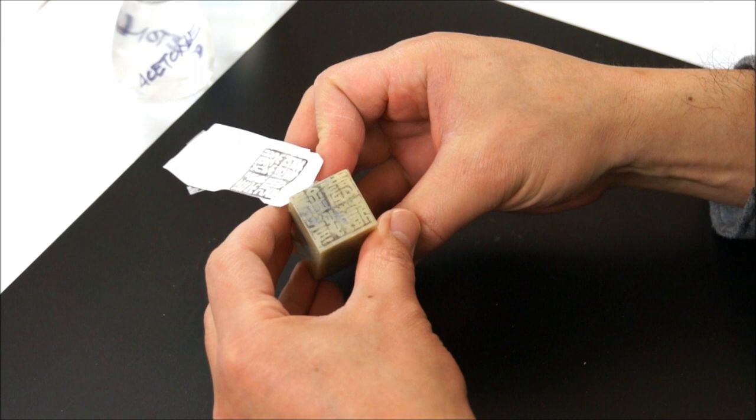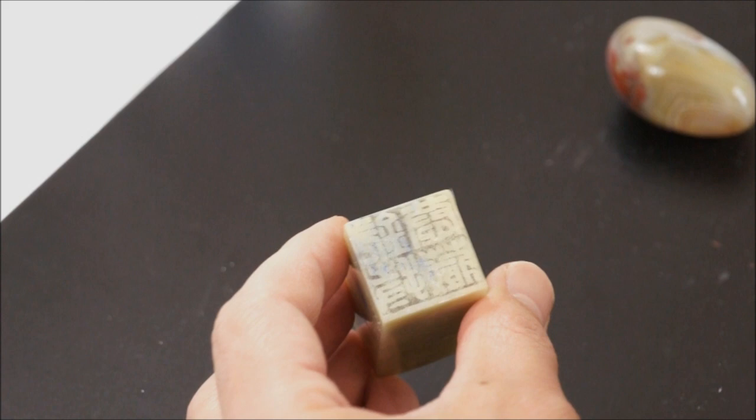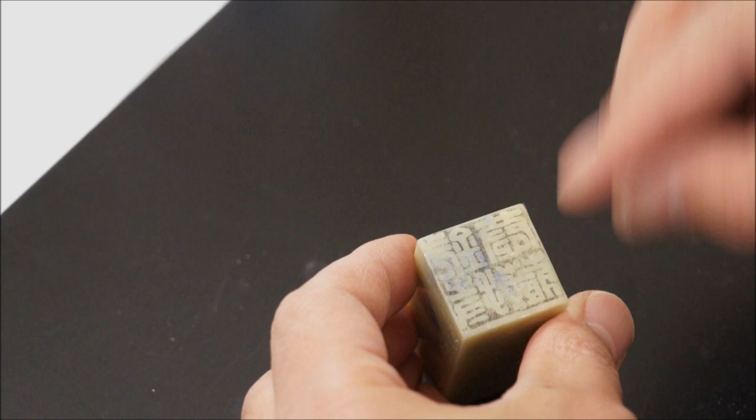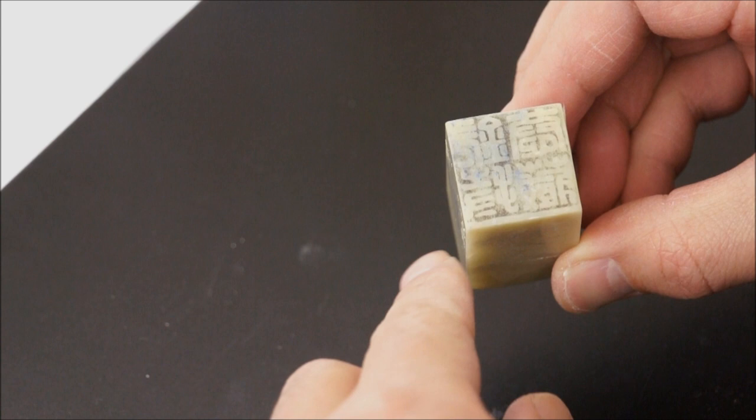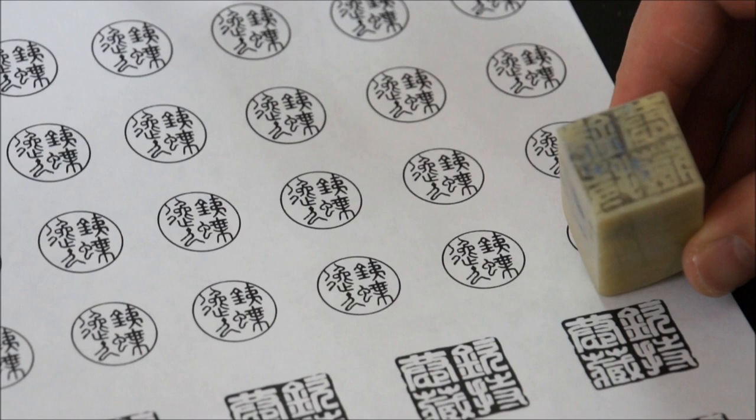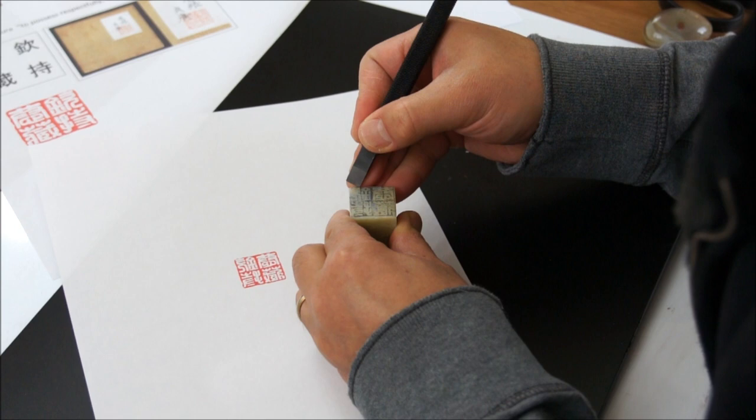Yeah, we have a pretty good transfer now on the stone. And you can use pencil or marker to enhance it. But for me, I can see it enough. So it's as if I have printed on the stone. A clear copy of the computer design is transferred on the stone now. You can see this is the computer design. And this is the copy on the stone. The next I'm going to carve.